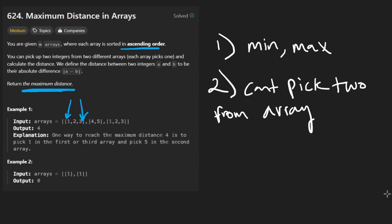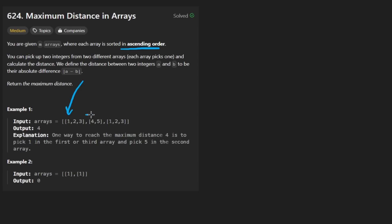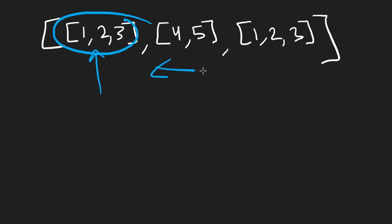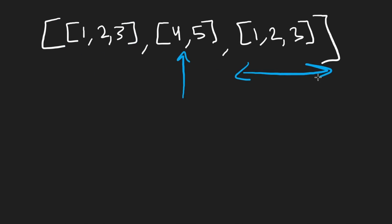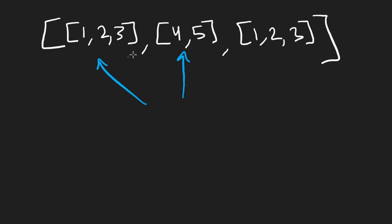The most brute force approach would be nested loops — N squared. For each subarray, we take the minimum element and go through every array that comes after it, computing the difference from the max element of each list. Then we repeat that by picking the max element from the current list and going through the minimums of all remaining lists. For each array, we only compare it to arrays that come after it, to ensure we don't pick two elements from the same list. We don't need to look at arrays before the current one because we already covered those pairs.